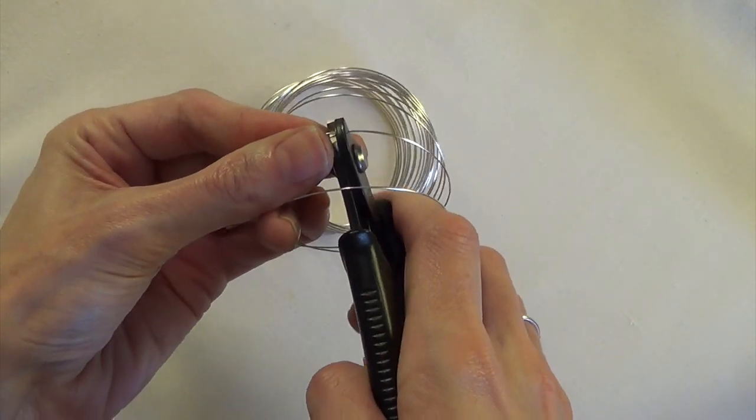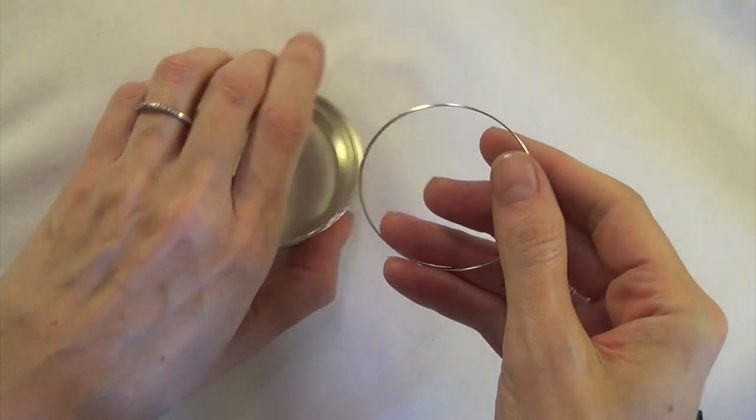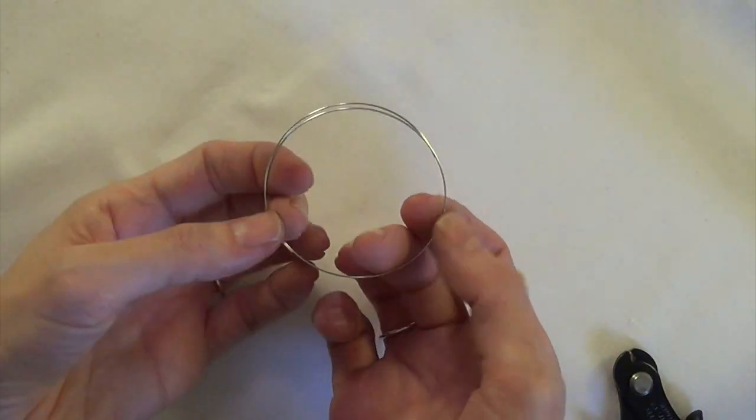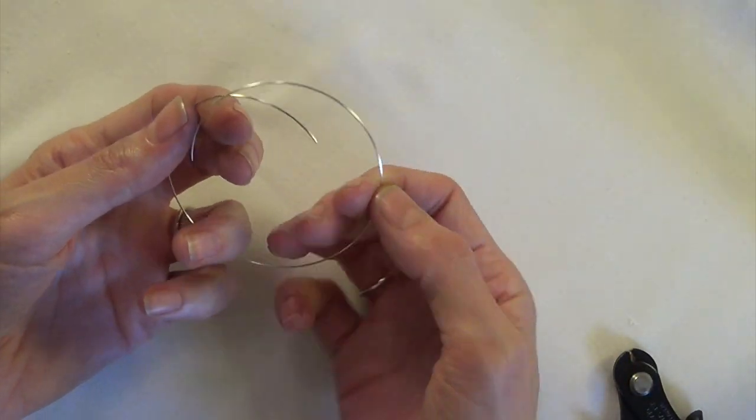It doesn't have to be too exact here and that's going to give you enough wire to overlap so that your bangle will be adjustable.